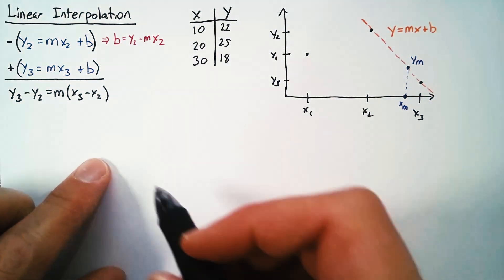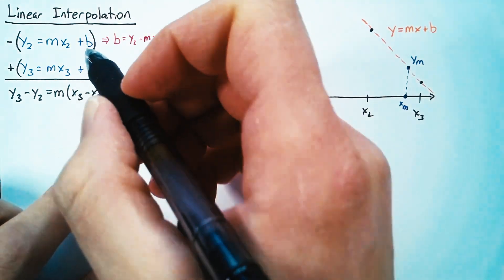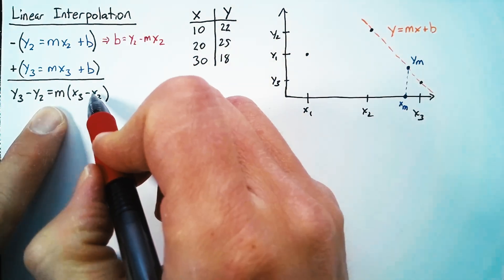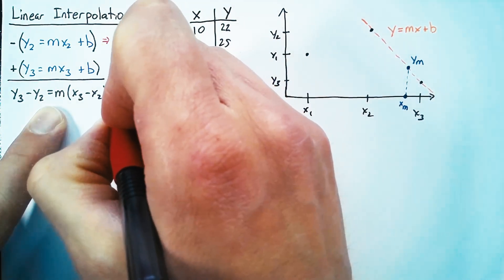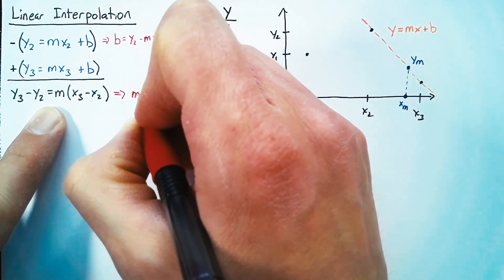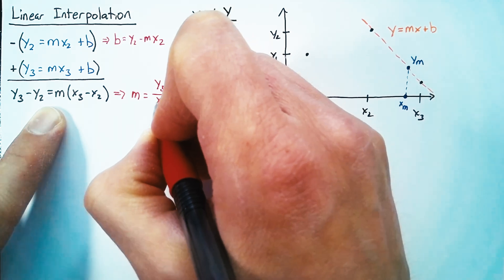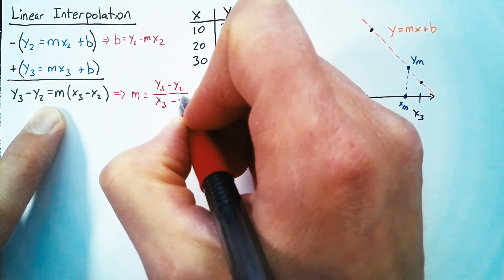And so what that gives us is y3 minus y2 is equal to m times x3 minus x2. And then our b's just fall off because one of these is positive, the other is negative. And so I can divide through by this x3 minus x2 to end up with m is equal to y3 minus y2 over x3 minus x2.